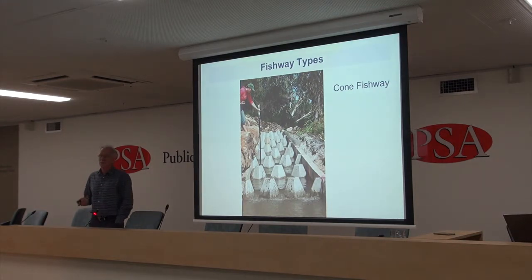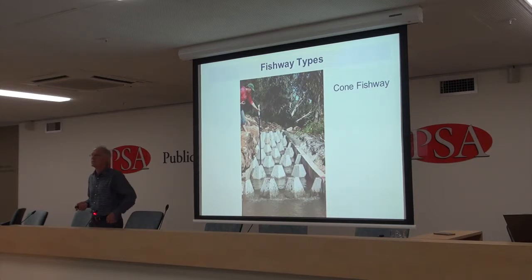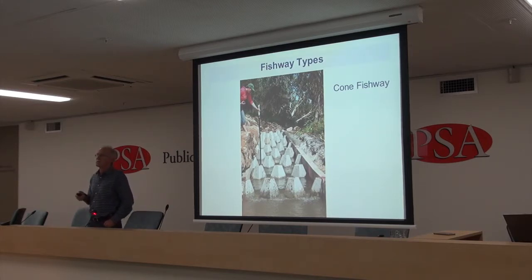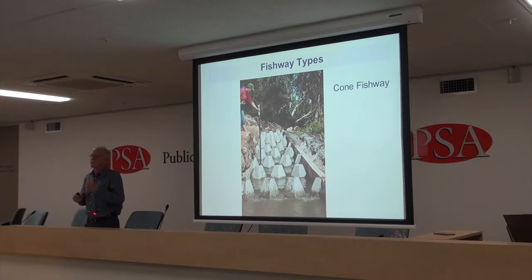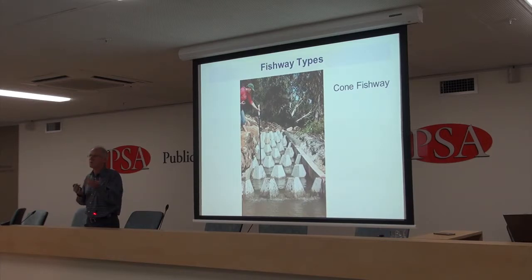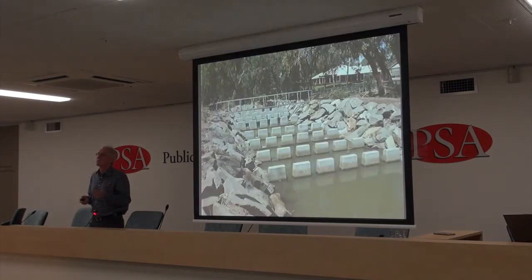This is another pool-and-weir type fishway — the cone fishway that Tim Marsden developed in Queensland. It's been used in a number of places in Queensland and has been quite effective for small fish at specific sites. It has a narrow headwater range — if the water rises too high, some cones would drown out. So for small fish and a narrow headwater range, this is a good option.